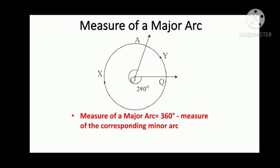Therefore, measure of a major arc AXQ will be 360 degrees minus 70 degrees which gives us 290 degrees. This is how we find out the measure of the major arc.